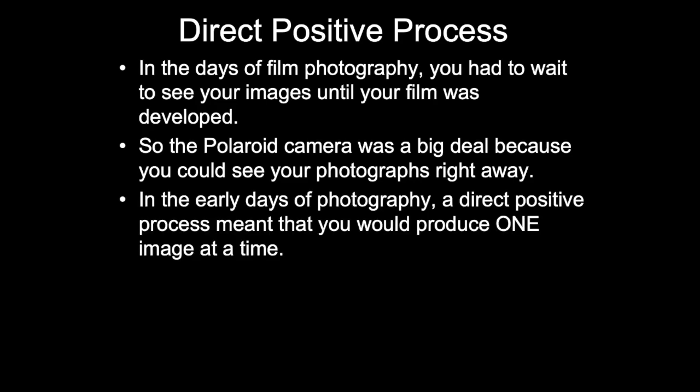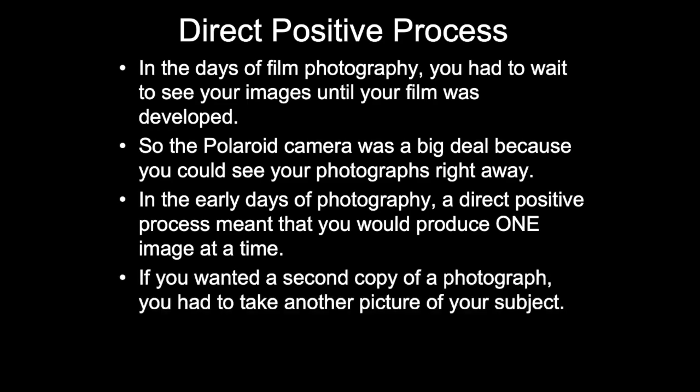In the early days of photography, a direct positive process meant that you would produce one image at a time. If you wanted a second copy of a photograph, you had to take another picture of your subject.